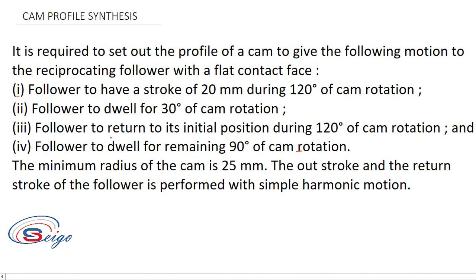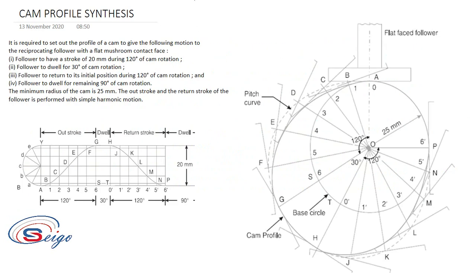This is the displacement diagram for simple harmonic motion. Here 120 degrees is for the out-stroke, then 30 degrees for the dwell, then 120 degrees for the return stroke, and the remaining 90 degrees for dwell again. Please refer to my previous lectures for understanding how to draw the displacement diagram for simple harmonic motion.